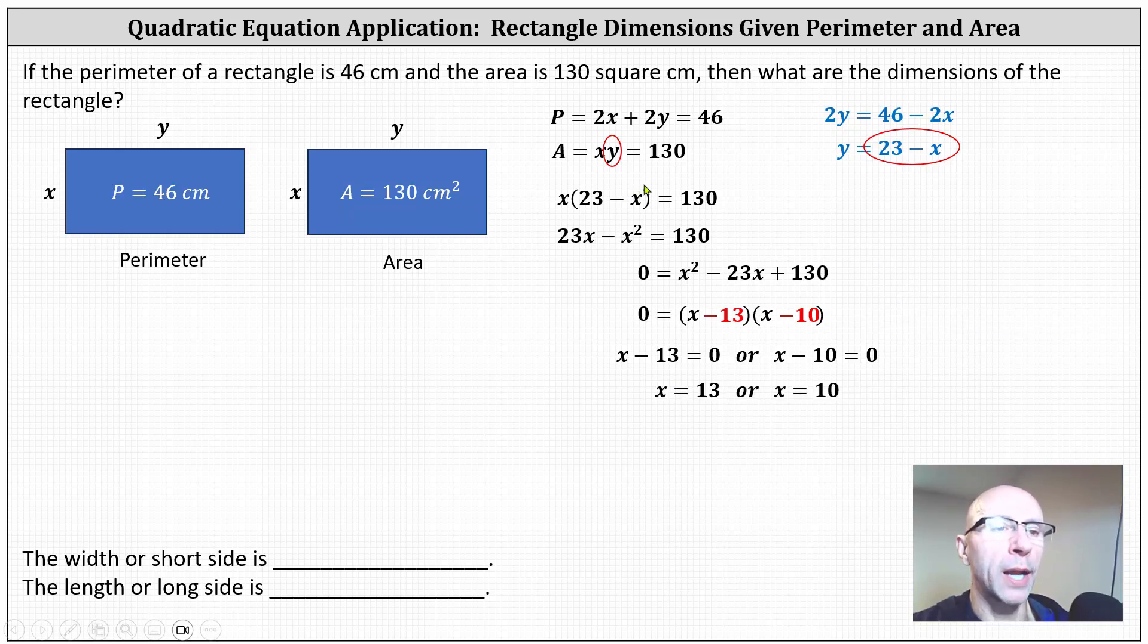We still have to go back and find y now. To do this, let's use the fact that we know that x times y equals 130. So when x is 13, y must be positive 10. And when x is 10, y must equal positive 13.